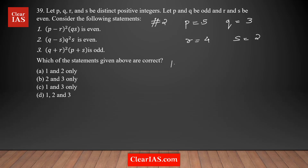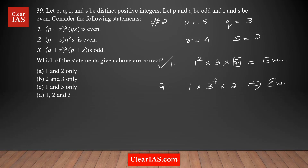Statement one: (p minus r) squared times q times s equals (five minus four) squared times three times two equals one times three times two. This is a multiple of two, so it's even — statement one is correct. Statement two: (q minus s) times q squared times s equals one times nine times two — again a multiple of two, so it's even. Statement two is also correct.